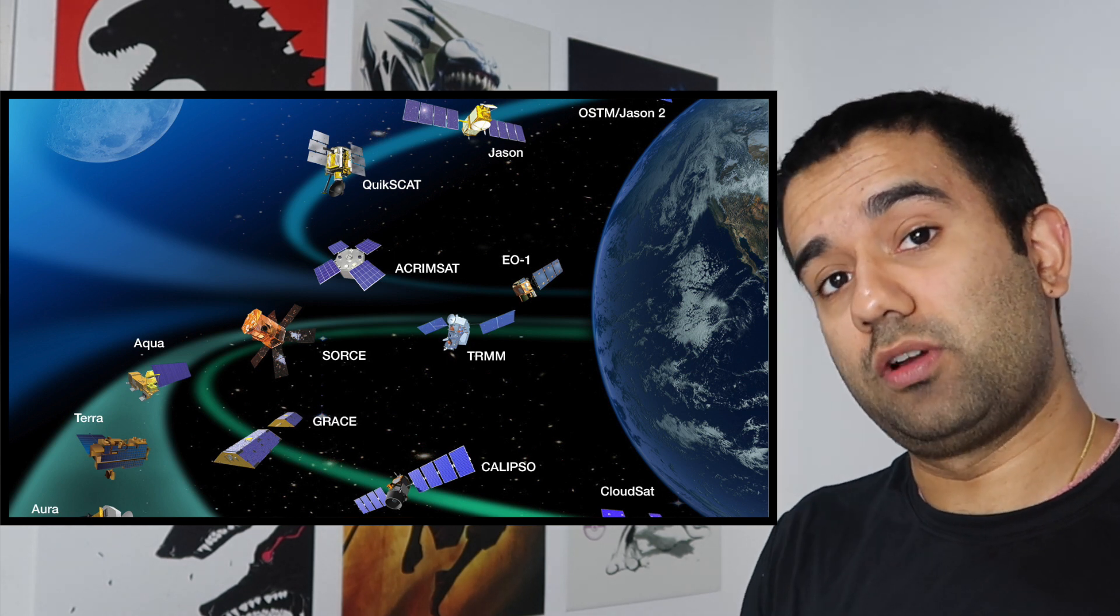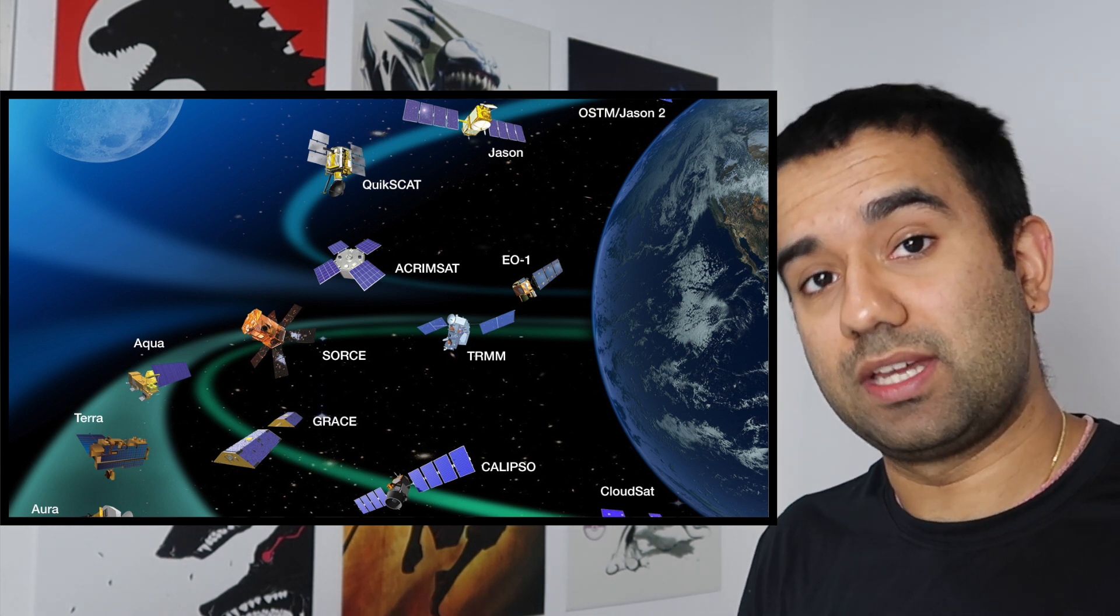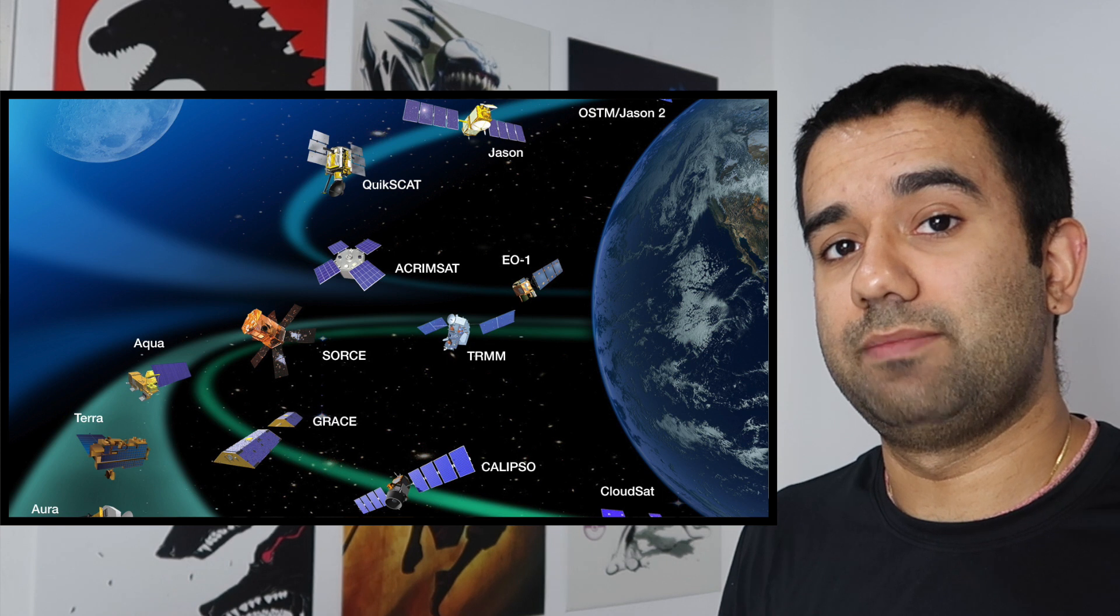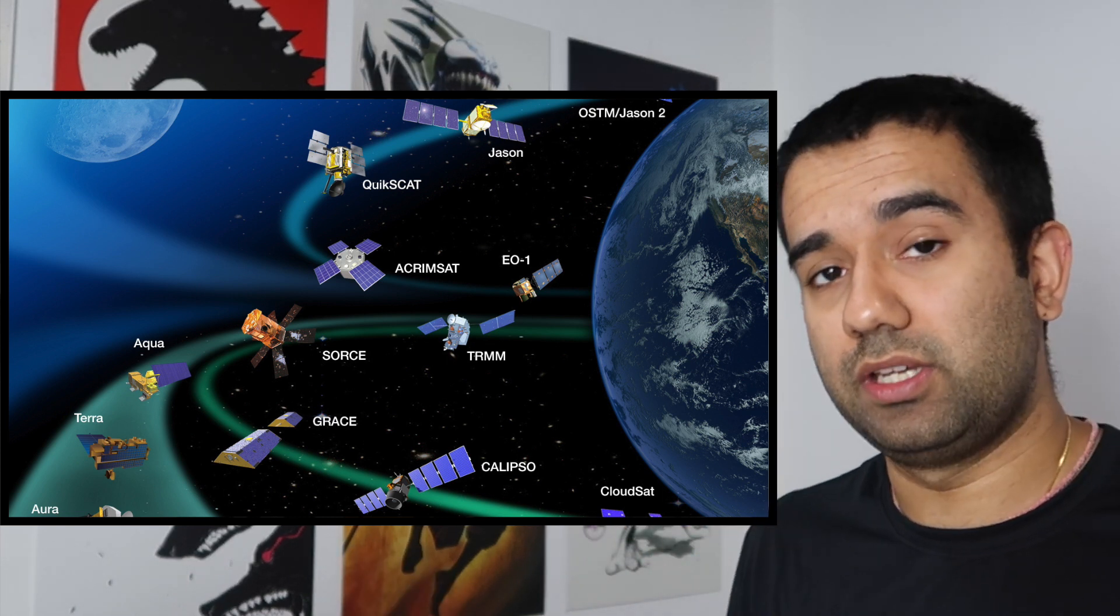The closer the satellite is to Earth, the faster it's actually moving around the planet, because the stronger the pull of gravity is on that object. NASA's aqua satellite, for example, takes 99 minutes to make one rotation around the Earth, versus the moon that takes 28 days.